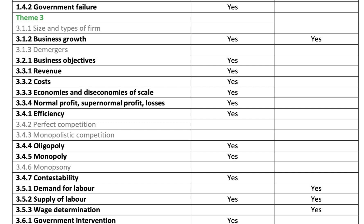In theme three — essentially year 13 micro for lots of students — they've taken out size and types of firms, and de-mergers. Business growth — horizontal, vertical integration and so on — is in for both paper one and paper three. The chunk of theory of the firm: revenue curves, cost curves, economies and diseconomies of scale, different types of profit — all included in paper one. And also the different types of economic efficiency are included in paper one.